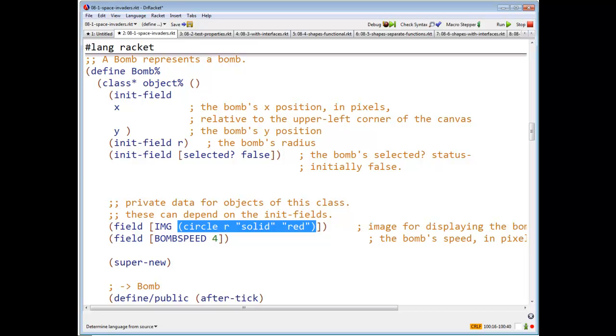So here, the image of a BOM is going to be a circle, a solid circle that is red, and it is a radius R. Where does the R come from? It comes from the init field. And here is another field called BOM speed, and its value is 4.